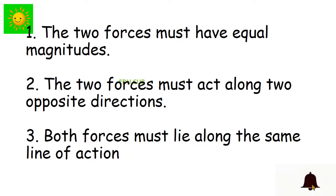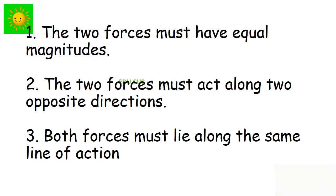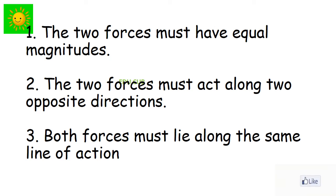In each of the instances described above, only two forces were acting on the object. The two forces were equal in magnitude and opposite in direction, and their lines of action were the same. For an object to remain in equilibrium under two forces, three conditions must be satisfied: first, the two forces must have equal magnitude; second, the two forces must act in opposite directions; third, both forces must lie along the same line of action.